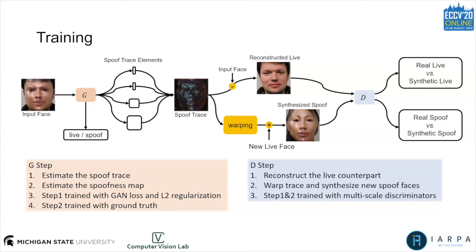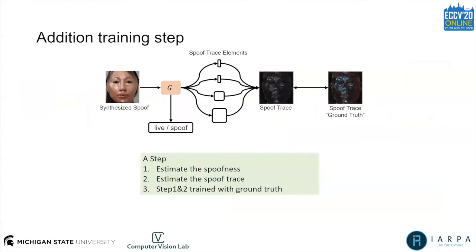Both the synthesized image and reconstructed image will be sent along with the real image to the discriminator to distinguish between the real and the synthetic. Thanks to the estimated spoof trace, the synthesized spoof comes with ground-truths. So we have a third step, which is an additional training step. The synthesized spoof will be fed into the generator to estimate the spoofness and the spoof trace, and both will be supervised by the ground-truth.